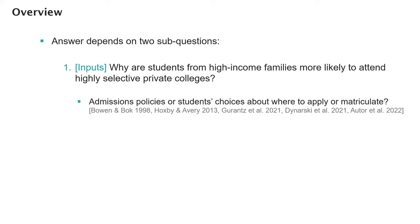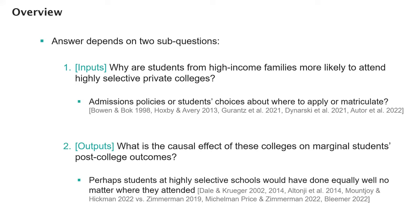The answer depends on two specific research questions. The first is about the inputs to these universities: why are students from high-income families more likely to attend highly selective private colleges, even relative to other students with the same test score? We want to decompose this between choices that students make — like where to apply — versus choices that the school itself makes, like whom to admit. Knowing where the pipeline is leaking will help us learn what policies might improve access.